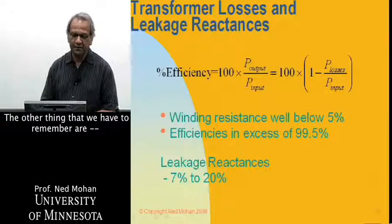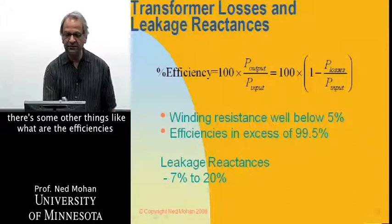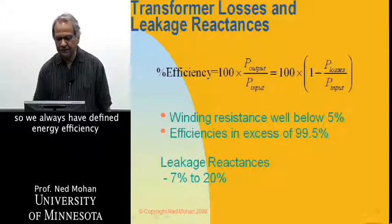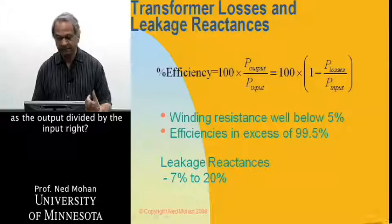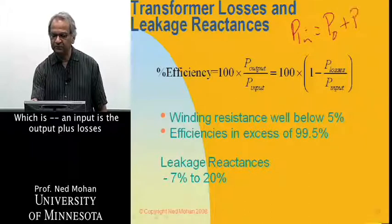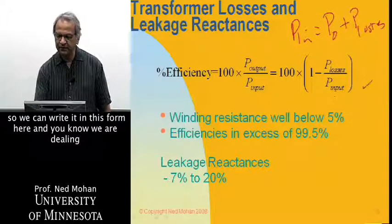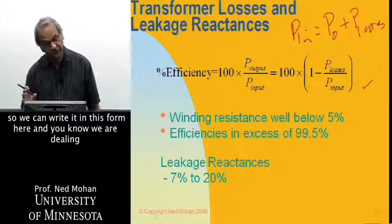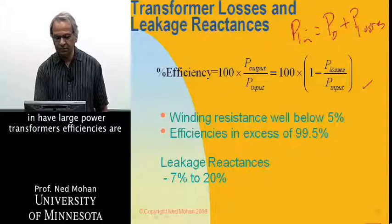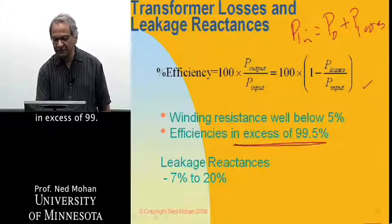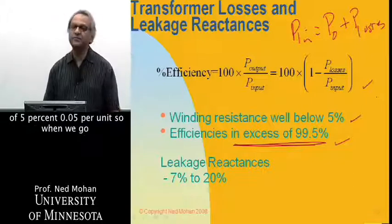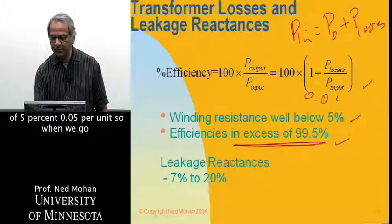The other thing we have to remember are, there's some other things, like, what are the efficiencies of these transformers? So, we always have defined the energy efficiency as the output divided by the input, right? Which is, an input is the output plus losses. So, we can write it in this form here, and we are dealing with extremely high power here, so efficiencies have to be very high, and they are. In large power transformers, efficiencies are in excess of 99.5%. And winding resistances are well below 5%, or 0.05 per unit.